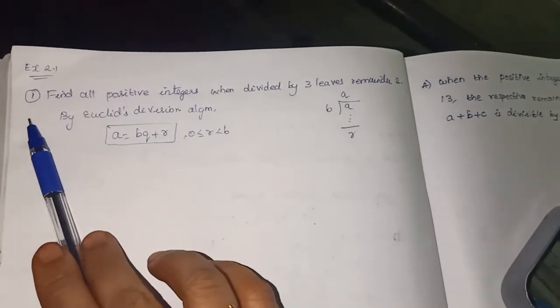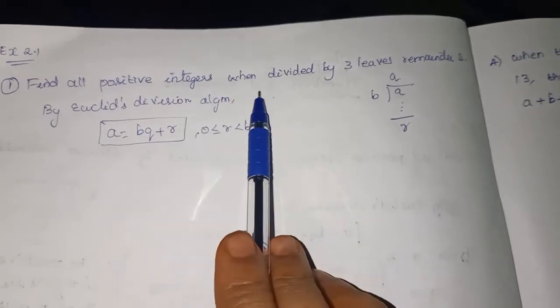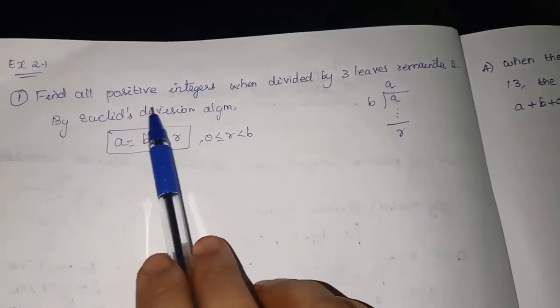Exercise 2.1, first sum. Find all positive integers when divided by 3 leaves remainder 2. So this is the question.